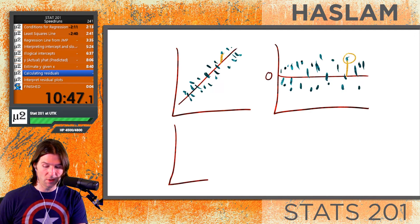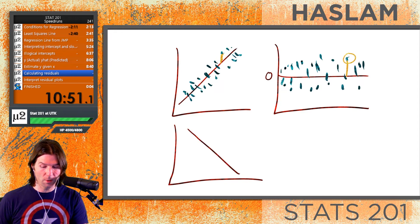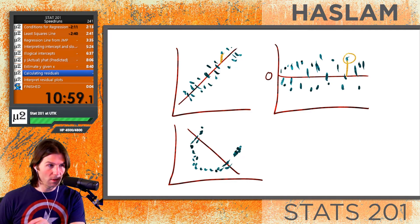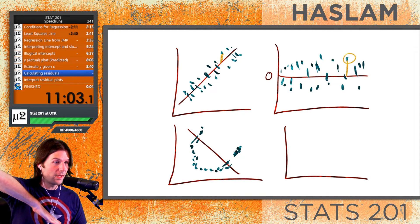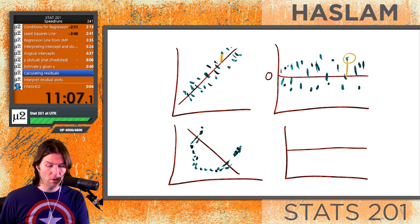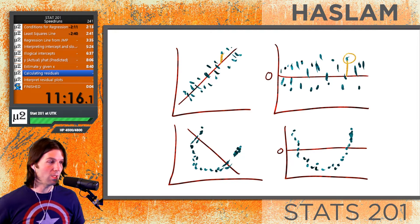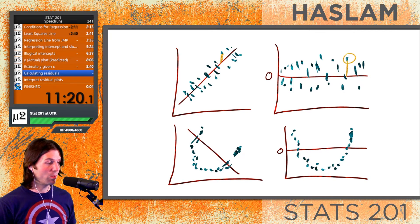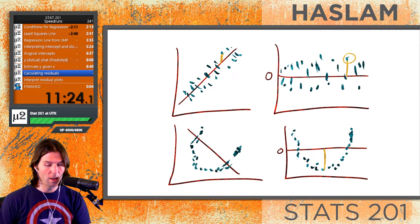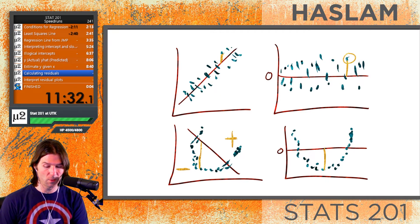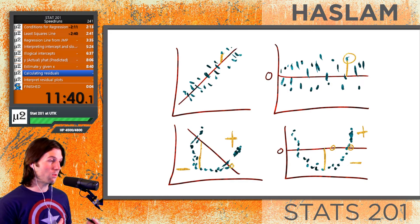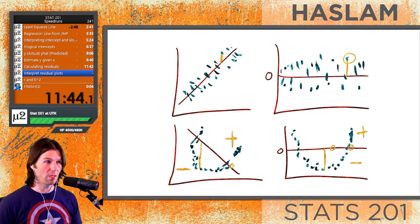You can also see problems in a residual plot. For example, a curved relationship fails the straight enough condition. If we turn that into a residual plot by making the line flat, we can see the same curved pattern emerge. Points below the line are in the negative residual zone, points above are positive residuals, and anything on the line has a residual of zero.